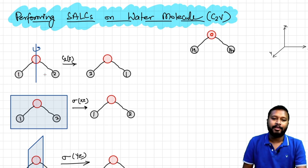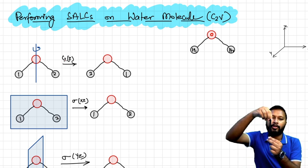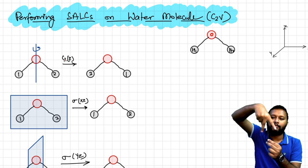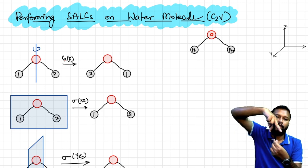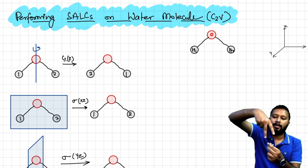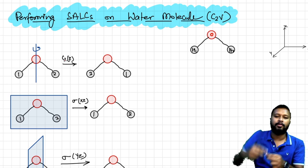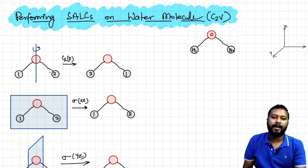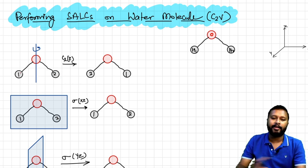The first symmetry operation is C2z — rotating the molecule through the z-axis. After this rotation, the back face is toward you and both hydrogen atoms interchange positions, so H1 comes to the place of H2 and H2 goes to the place of H1. This is a simple symmetry operation you're already aware of.